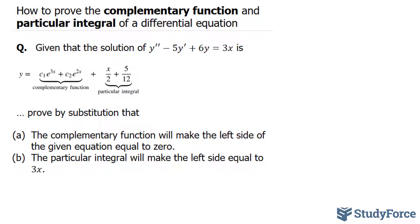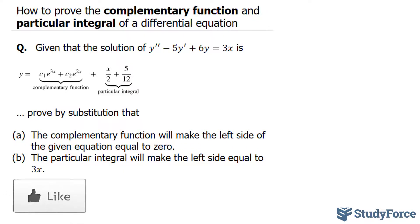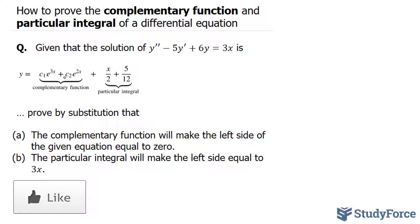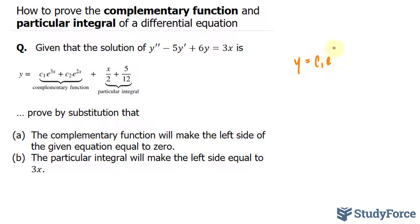Let's start with question (a). They want us to prove that the complementary function will make the left side equal to 0. So I will take the complementary function portion of this equation and take its derivative twice. We have y equals c1·e^(3x) plus c2·e^(2x).